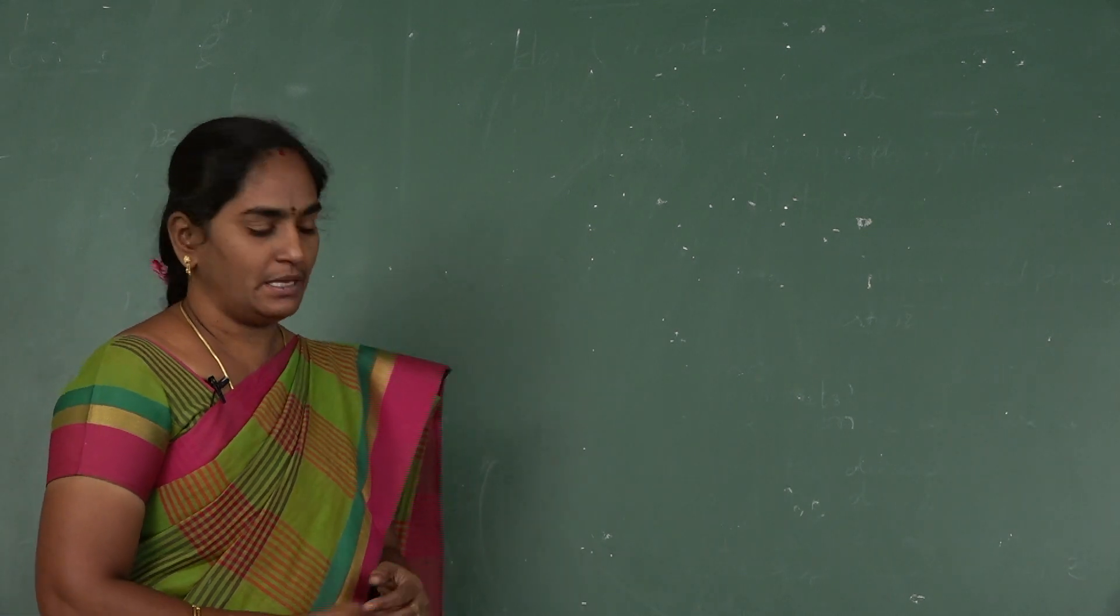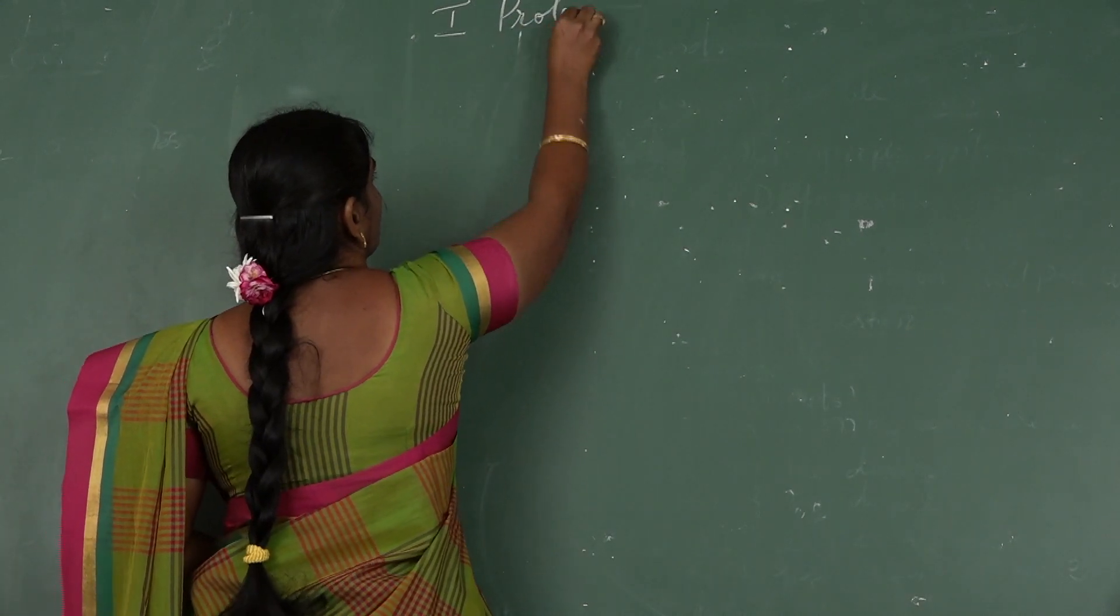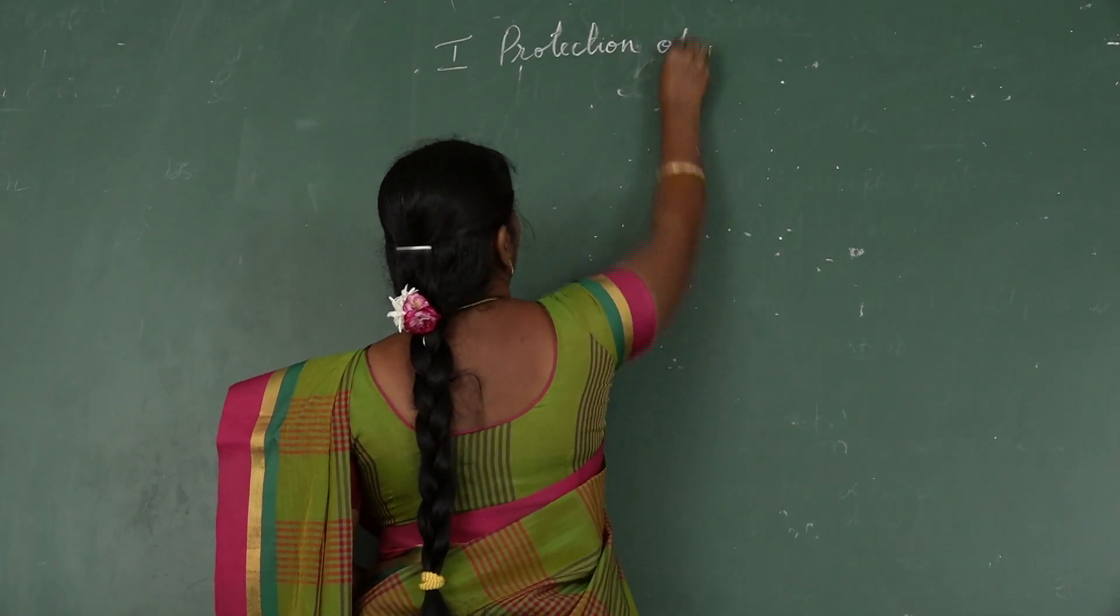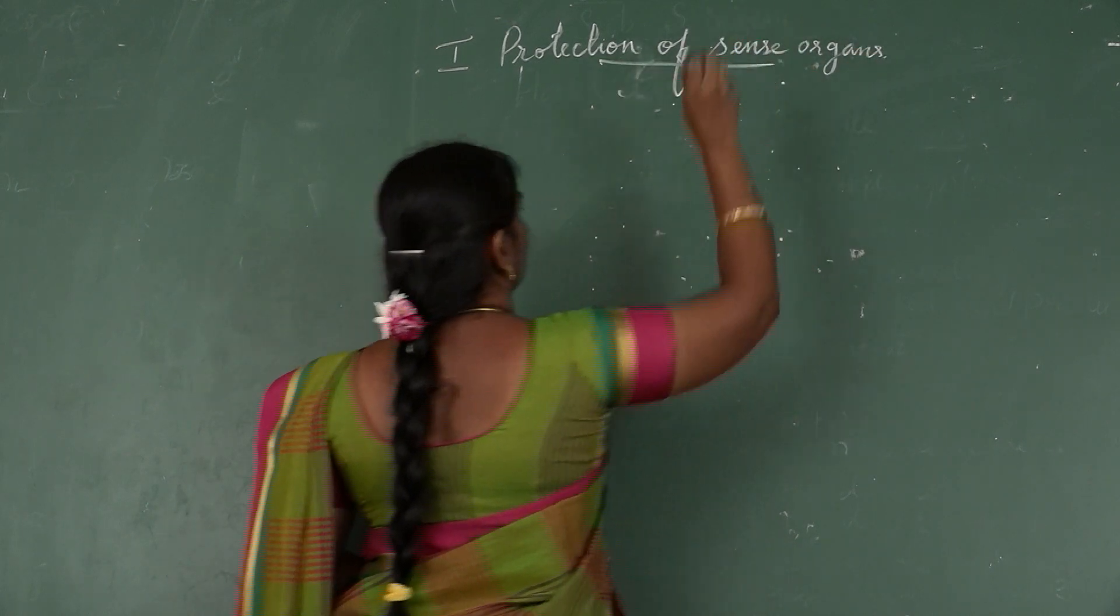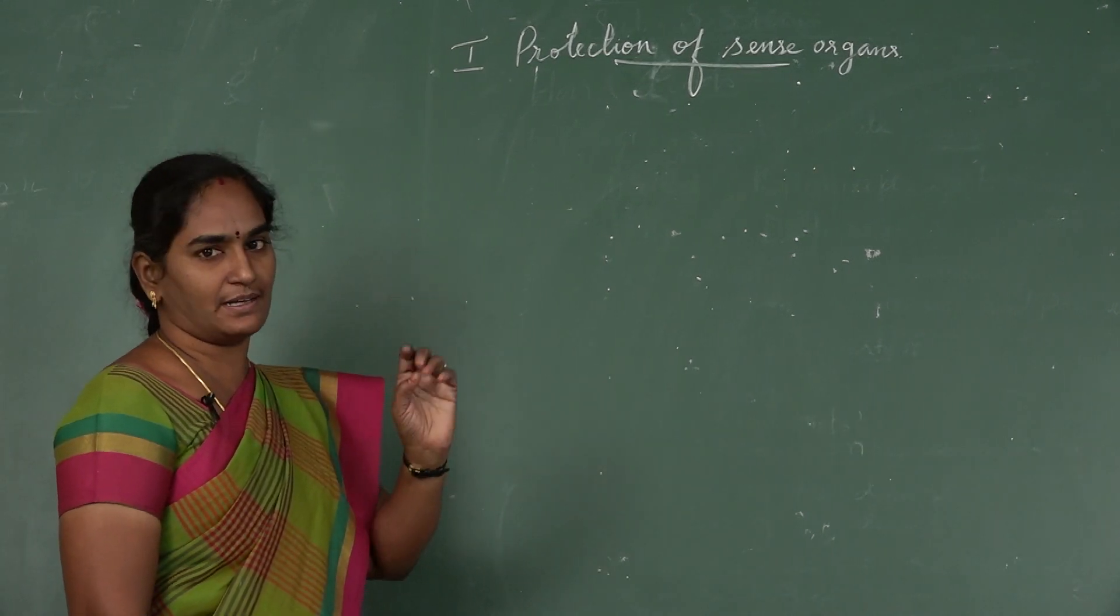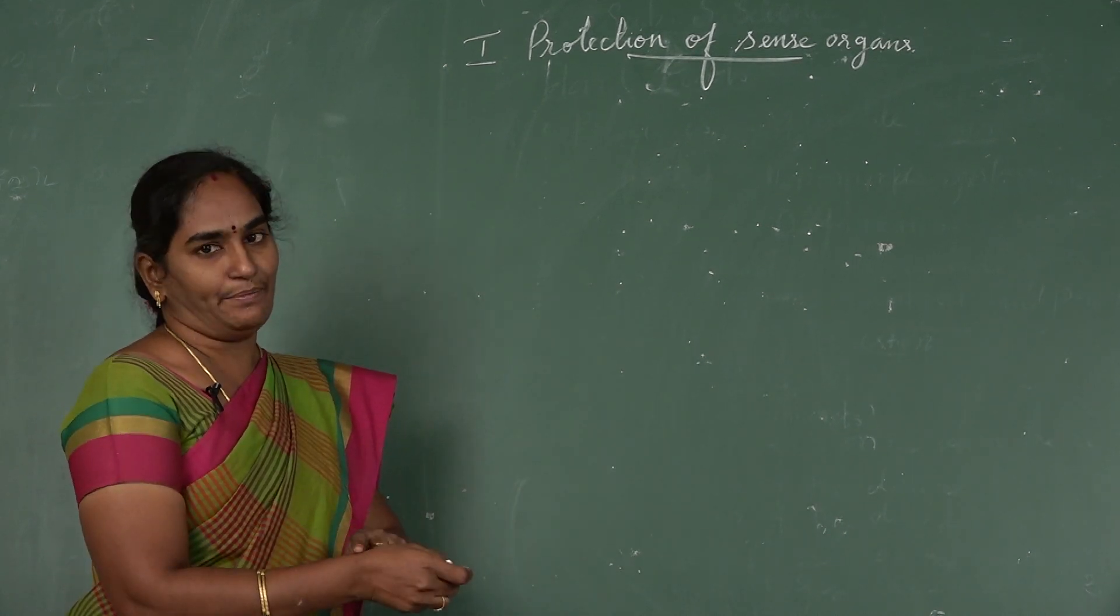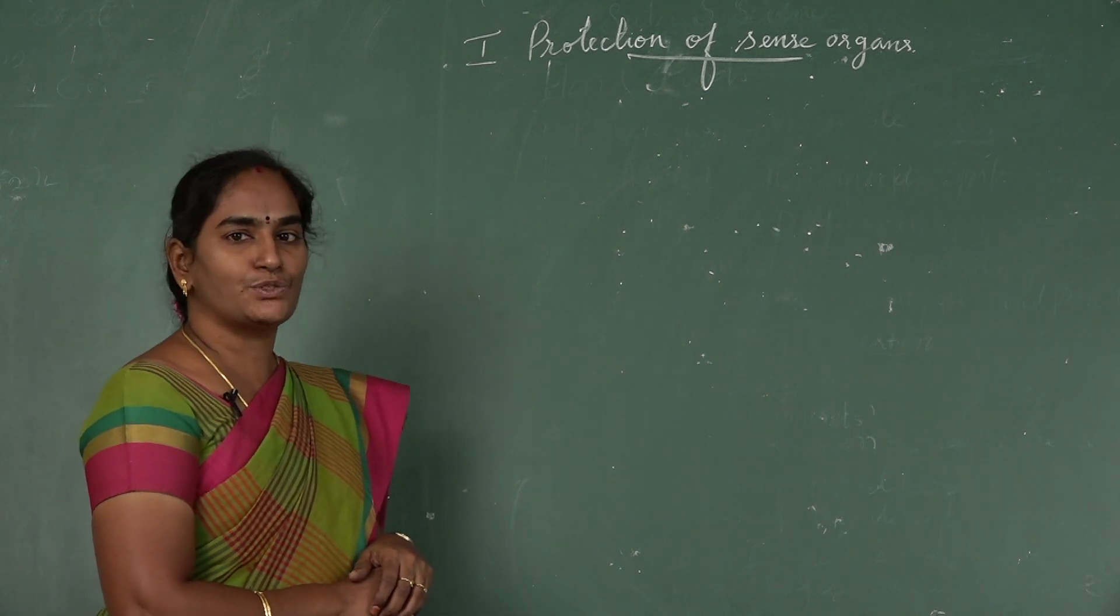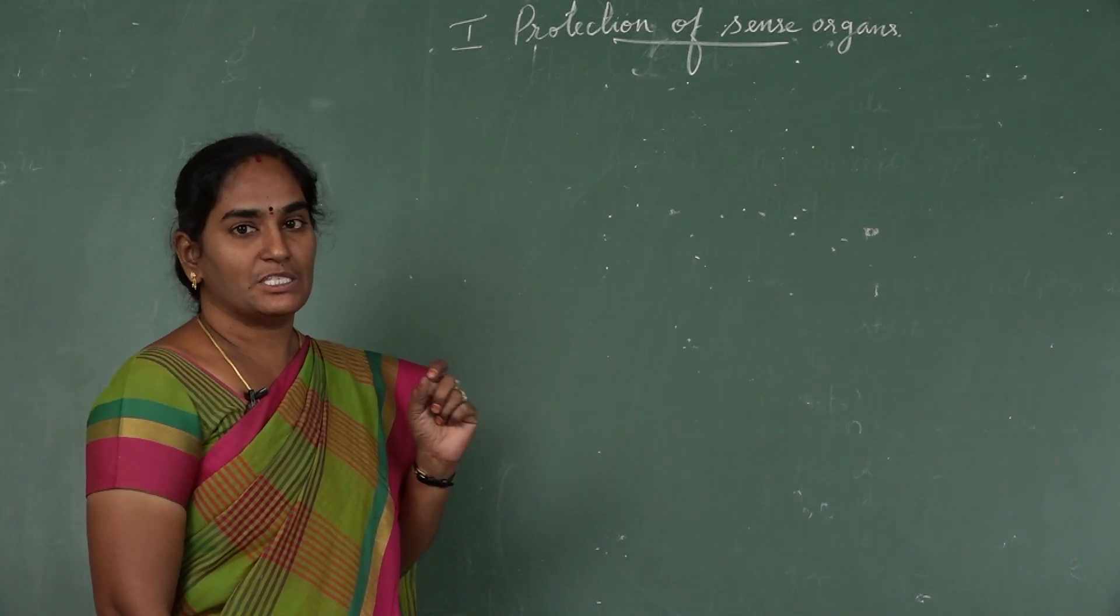Our first topic is protection of sense organs. Do you know what are the sense organs? We have 5 sense organs. What are they? Eyes, ear, nose, tongue and skin. These are 5 sense organs. What is the use of sense organs? The sense organs help us to observe and understand the world around us. The sense organs have some specific functions.